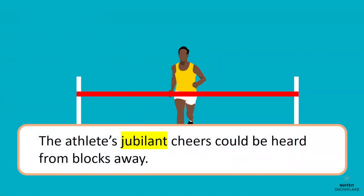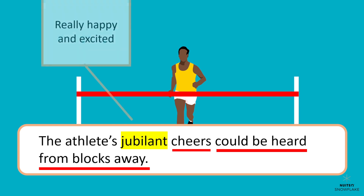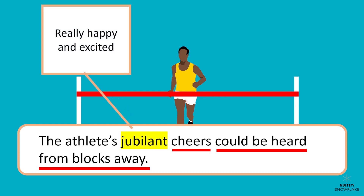The athlete's jubilant cheers could be heard from blocks away. What does jubilant mean? We know that the athlete was cheering, and that their cheers were really loud because they could be heard from blocks away. So jubilant must mean really happy and excited.